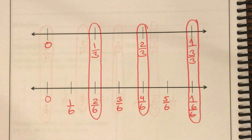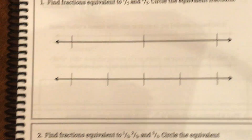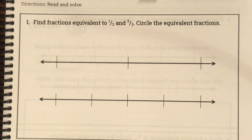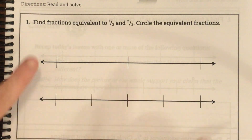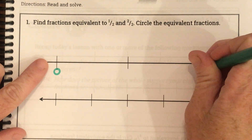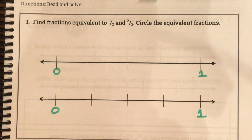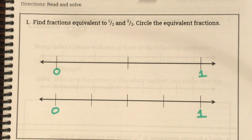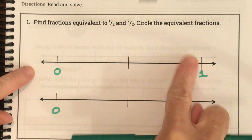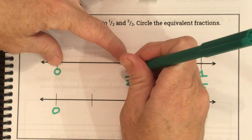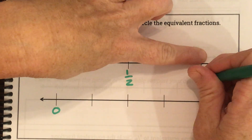Let's do some of these together. We're on page 140. The first one says: find fractions equivalent to one-half and two-halves — circle equivalent fractions. We start by putting a zero and a one on both number lines. On the first number line, the whole was cut into one part, two parts — so our denominator is two. Here I have one of the parts: one-half. Now I have two of the parts: two-halves.